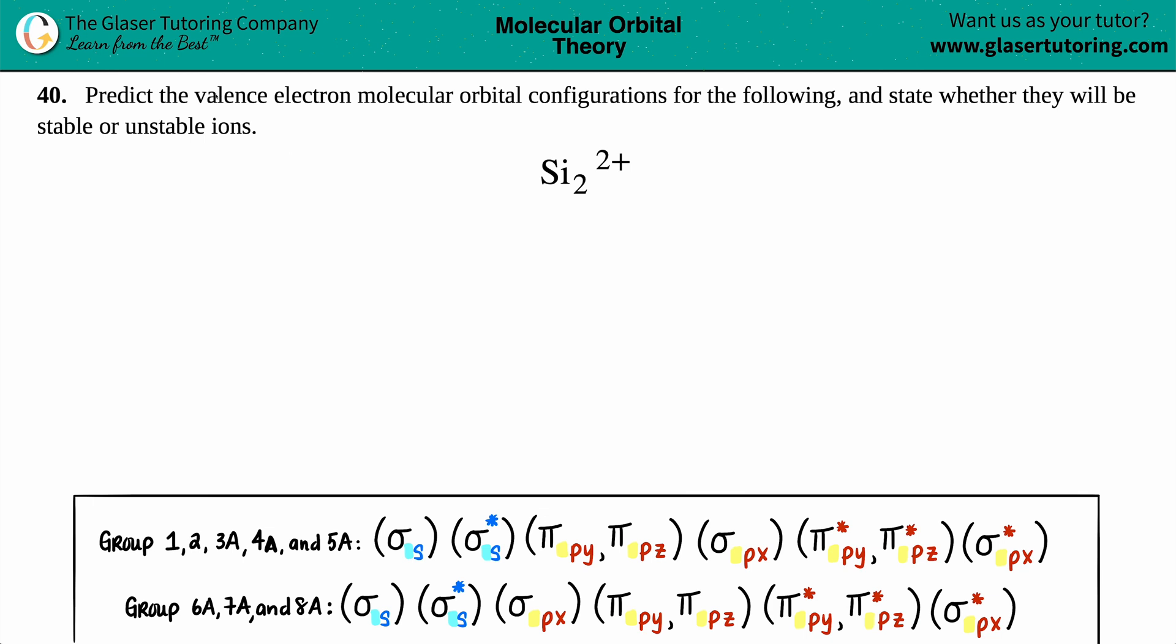Number 40: Predict the valence electron molecular orbital configurations for the following and state whether they will be stable or unstable ions. We have Si₂²⁺. In order to find the actual configuration for Si₂²⁺, we have to figure out how many total valence electrons are there in this molecule.